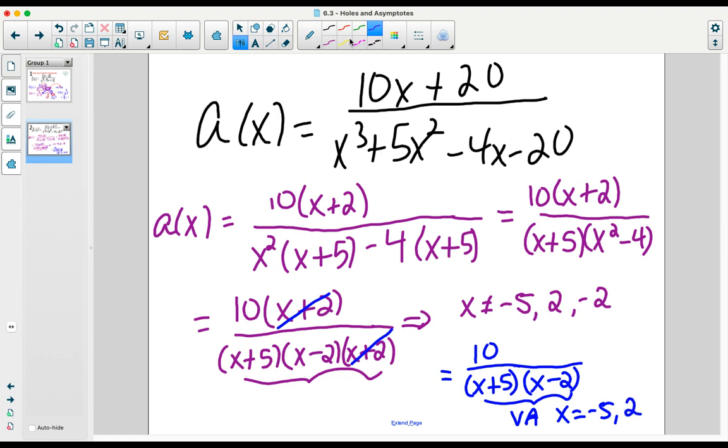And the fact that I canceled or simplified this factor means that that restriction at negative 2, that's where we're going to have a hole. So, vertical asymptotes at x is equal to negative 5 and x is equal to 2, a hole at x is equal to negative 2.